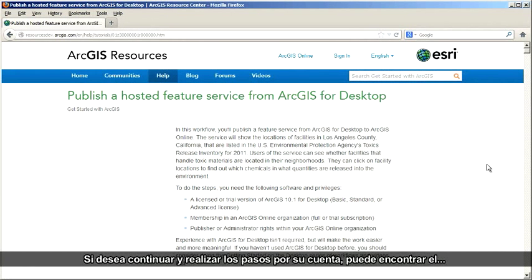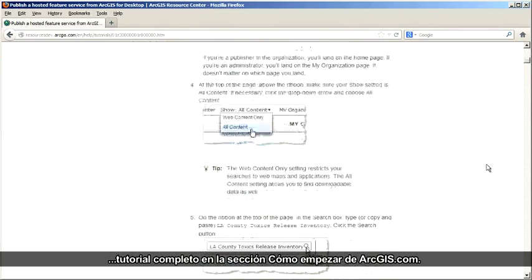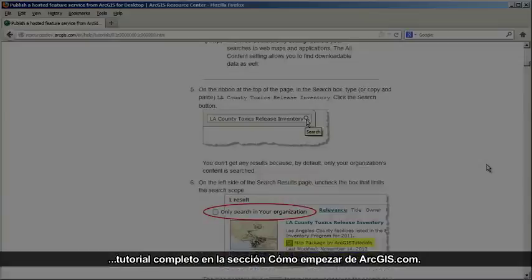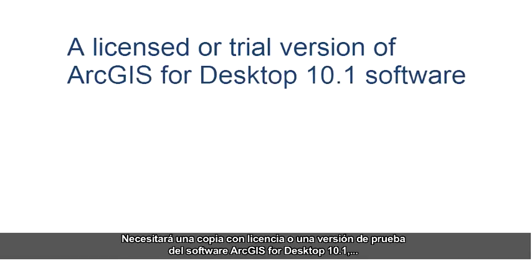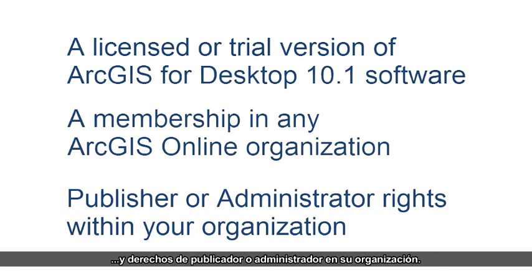If you want to follow along and actually do the steps yourself, you can find the complete tutorial in the Getting Started section of ArcGIS.com. You'll need a licensed copy or trial version of ArcGIS for Desktop 10.1 software, a membership in any ArcGIS Online organization with a full or trial subscription, and publisher or administrator rights within your organization.